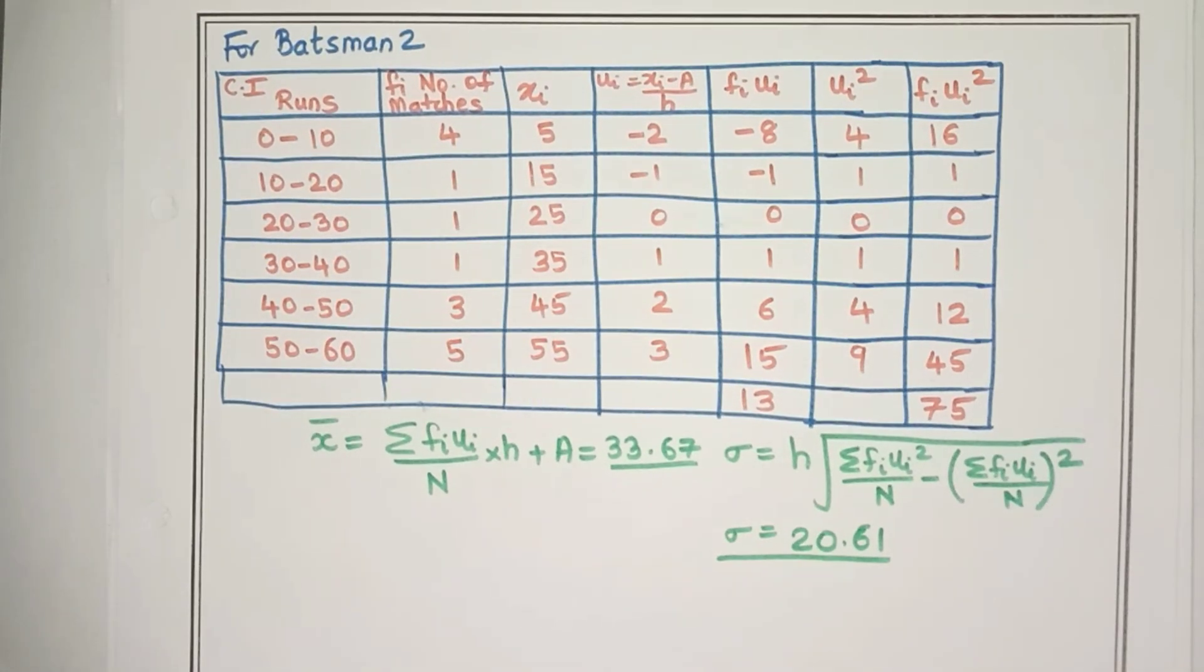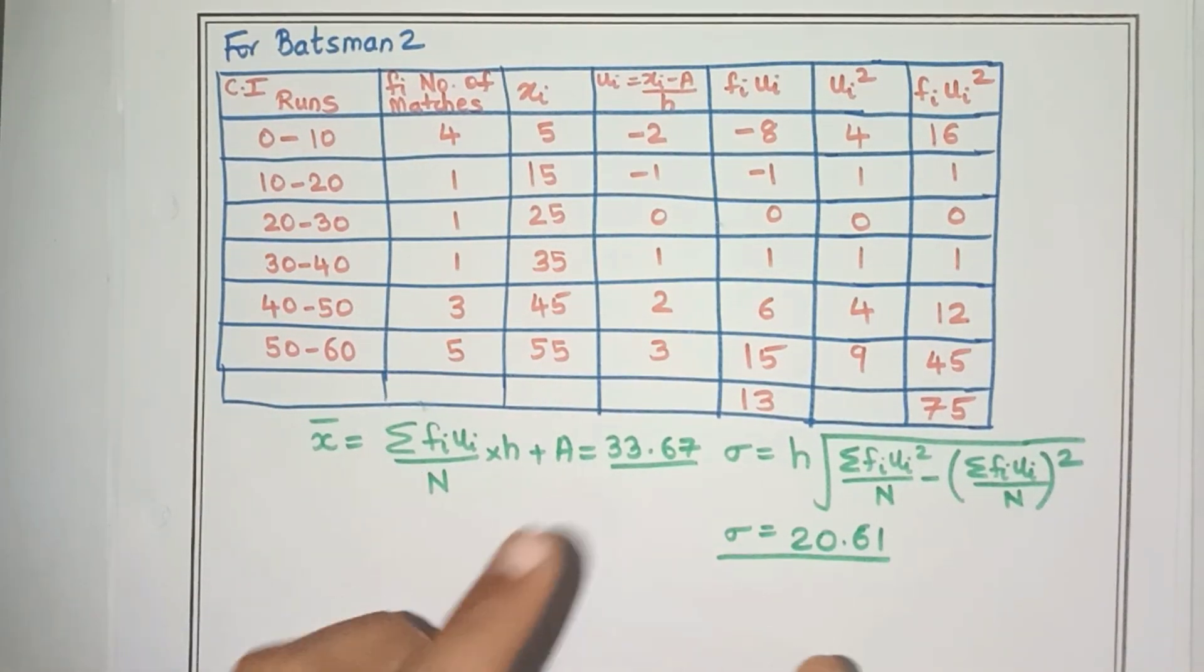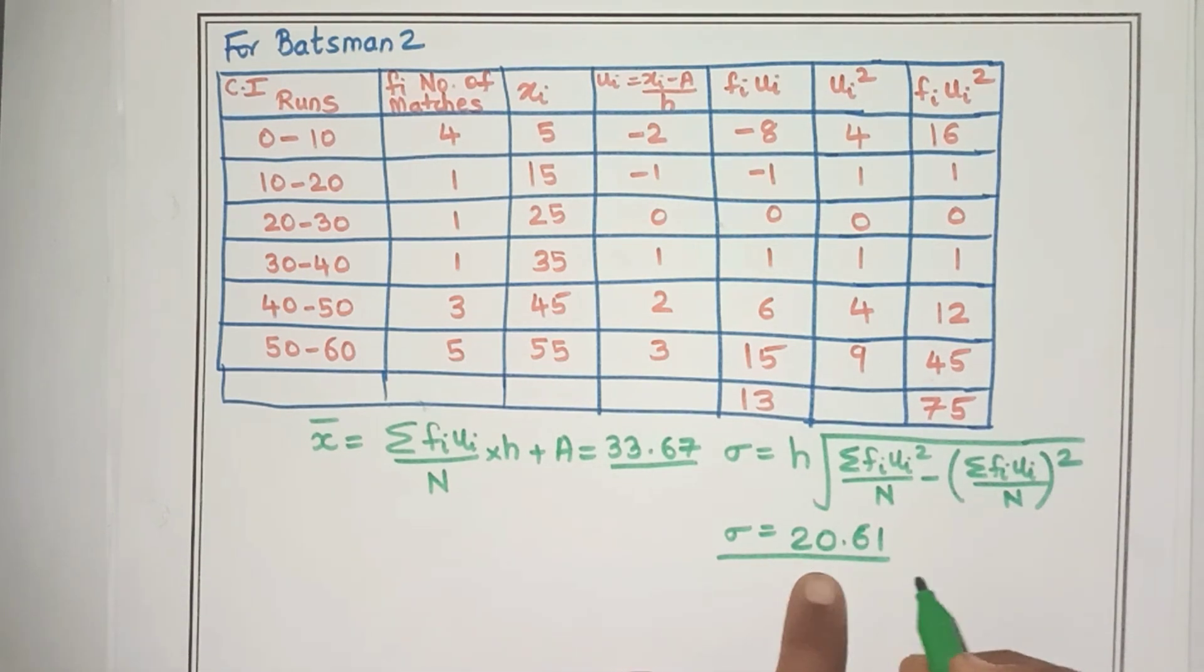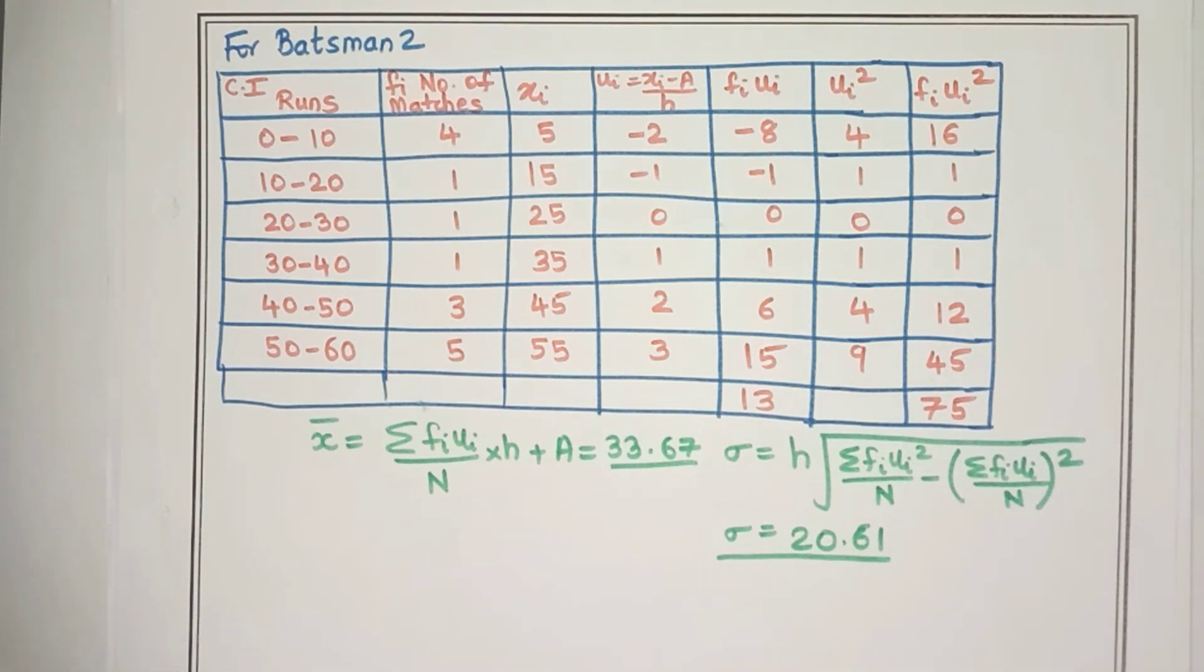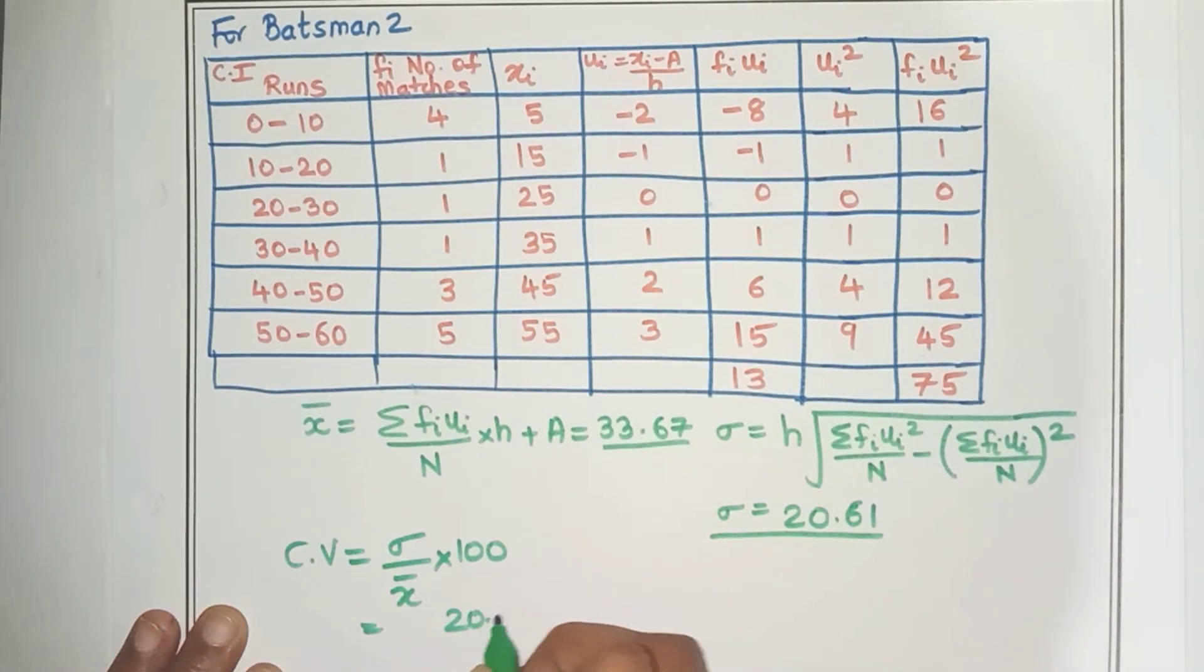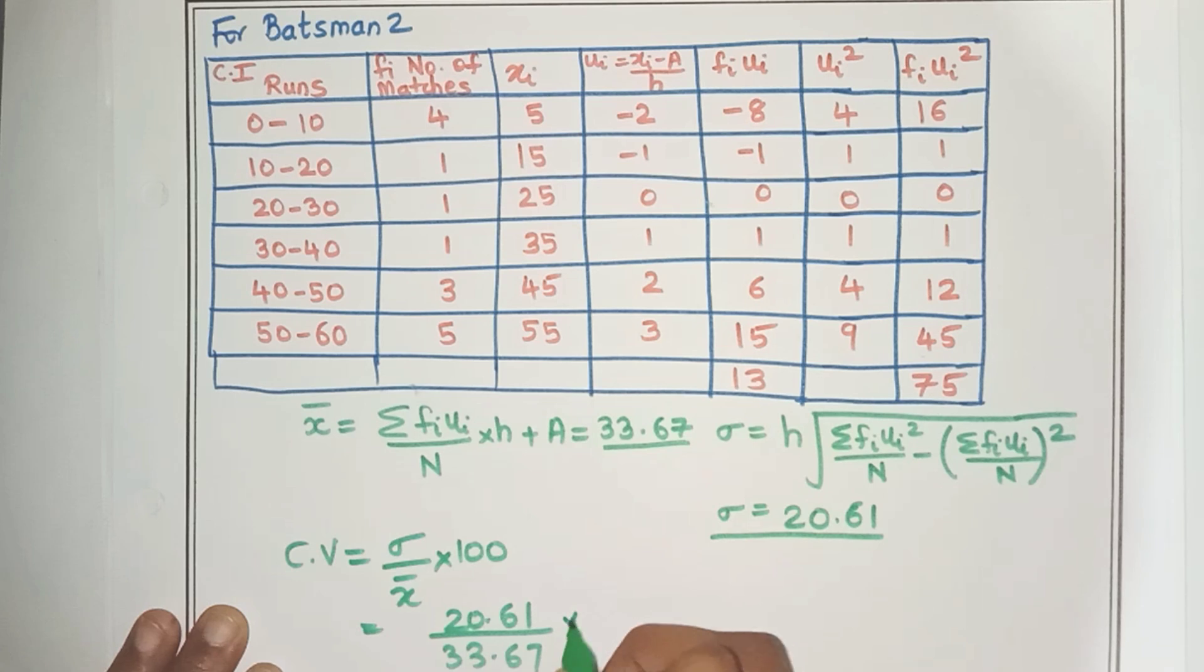So I've already done the calculation. The mean of the data is coming as 33.67 and the standard deviation is 20.61. You can just check it out. So let's now calculate the CV. It is going to be the standard deviation divided by mean into 100, which is nothing but 20.61 divided by 33.67 into 100.